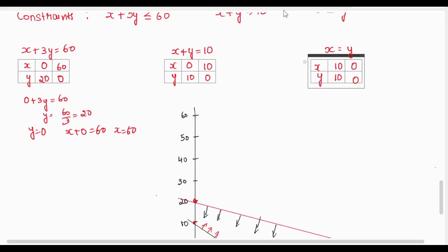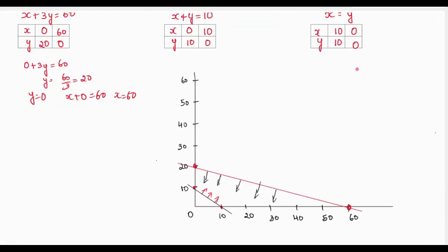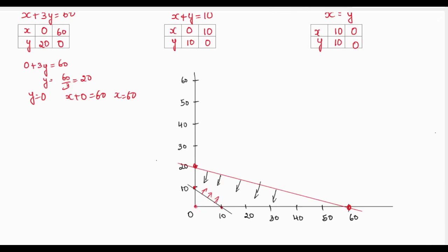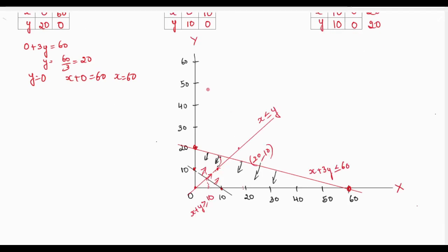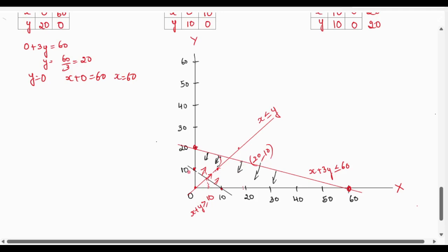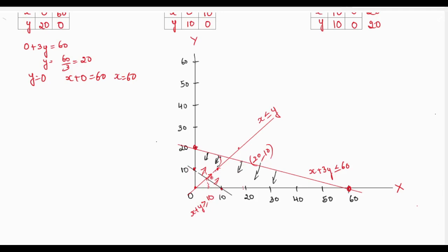For the third equation x = y: when x = 0, y = 0; when x = 10, y = 10; and when x = 20, y = 20. We join these points to draw the line. In the graph, the first equation is shaded below and the second equation is shaded above.